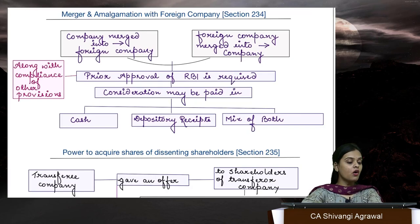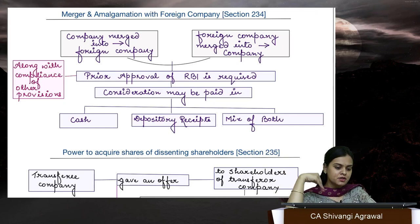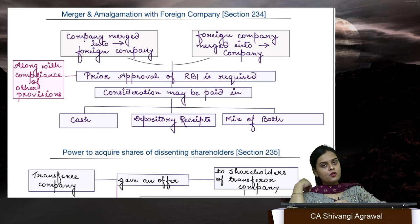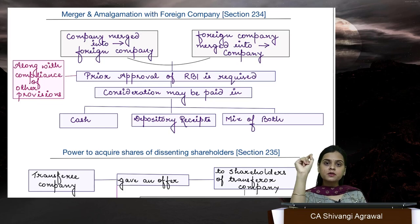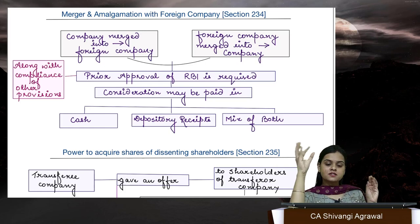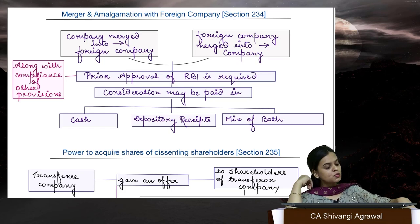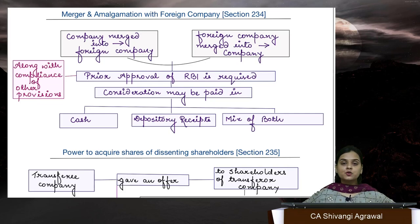Section 234 deals with merger or amalgamation of a foreign company. An Indian company can merge into a foreign company, and a foreign company can merge into an Indian company. The provisions are the same — we follow sections 230 to 232. One important point: for this section, 'foreign company' does not mean only a company incorporated outside India having a place of business in India as per the general definition — whether having a place of business in India or not, that is the foreign company for this particular section. The additional requirement is that you need RBI approval.